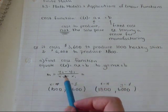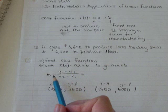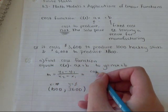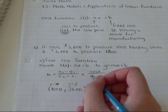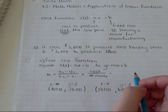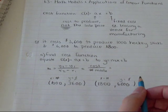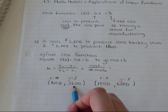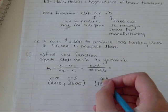So this is m equals y2 minus y1 over x2 minus x1, which is like saying it's the cost over the number of items made. So I'm going to take the largest cost and subtract it from the smallest cost. So this makes this y2 and x2.